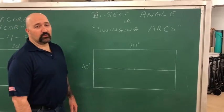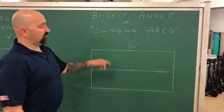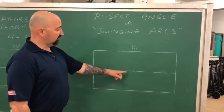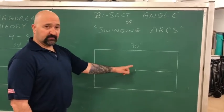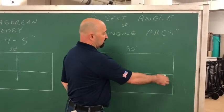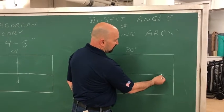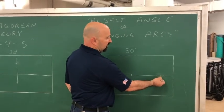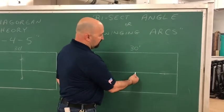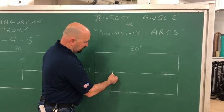Now we're going to learn about the swing and arcs method. We're going to take the same room — 10 by 30 — establish a control line and center point. From there, we're going to take a number that's close to the end of the room; we'll pick 14. We're going to make a mark on the control line at 14, then come from the center point that same 14 feet and make a mark.